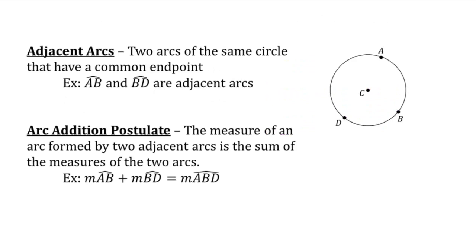Next are adjacent arcs. Adjacent arcs are just like adjacent lines — they are two arcs of the same circle that have a common endpoint, so two arcs that are touching. In this example, AB and BD are adjacent arcs. Like segment addition and angle addition, we also have arc addition: the measure of an arc formed by two adjacent arcs is the sum of the two arcs. So the measure of arc AB plus arc BD equals the measure of arc ABD.